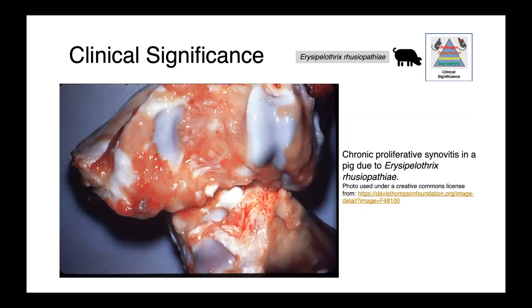And then finally, here we have a proliferative synovitis in a pig associated with chronic Erysipelothrix infections. This proliferative growth of tissues within the joint is abnormal.